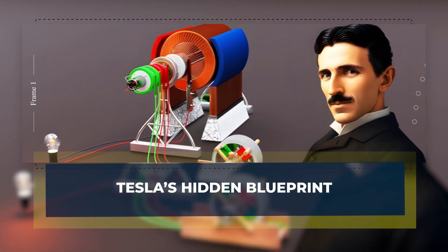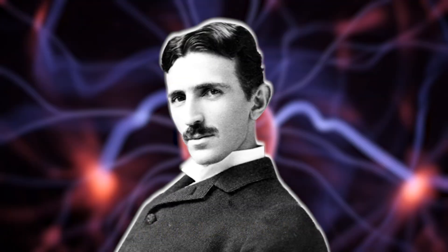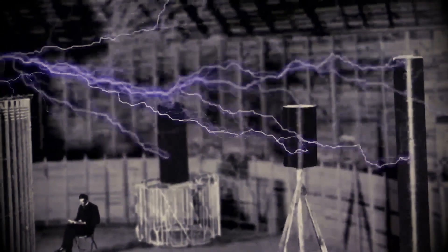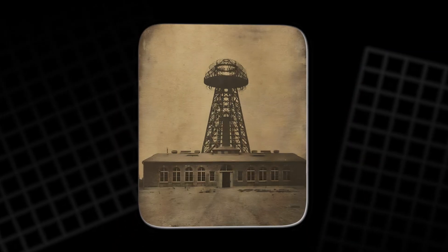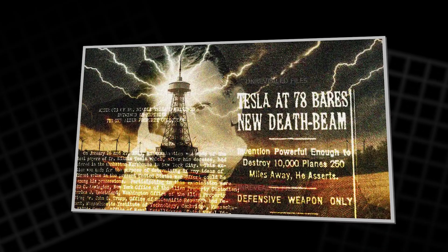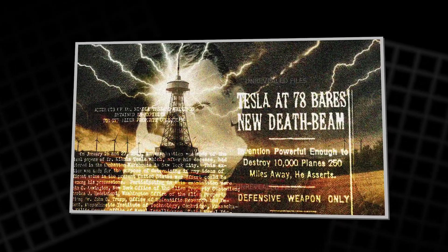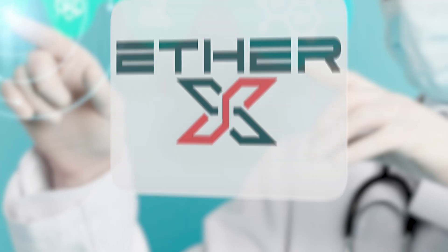Tesla's hidden blueprint. For decades, Nikola Tesla's story has been safely sliced. We hear about alternating current, his rivalry with Thomas Edison, the ruined tower at Wardenclyffe and the dream of wireless power. Then come the fringe tales about death rays and FBI files. All of it sounds huge, yet the same gap remains.